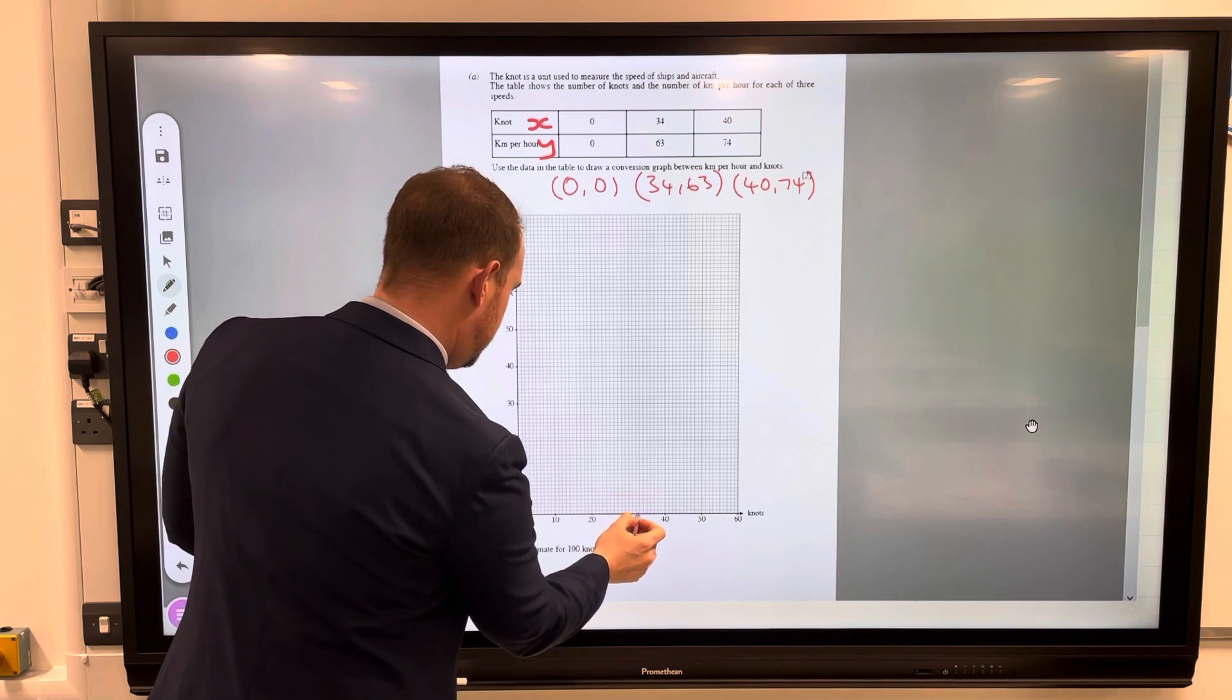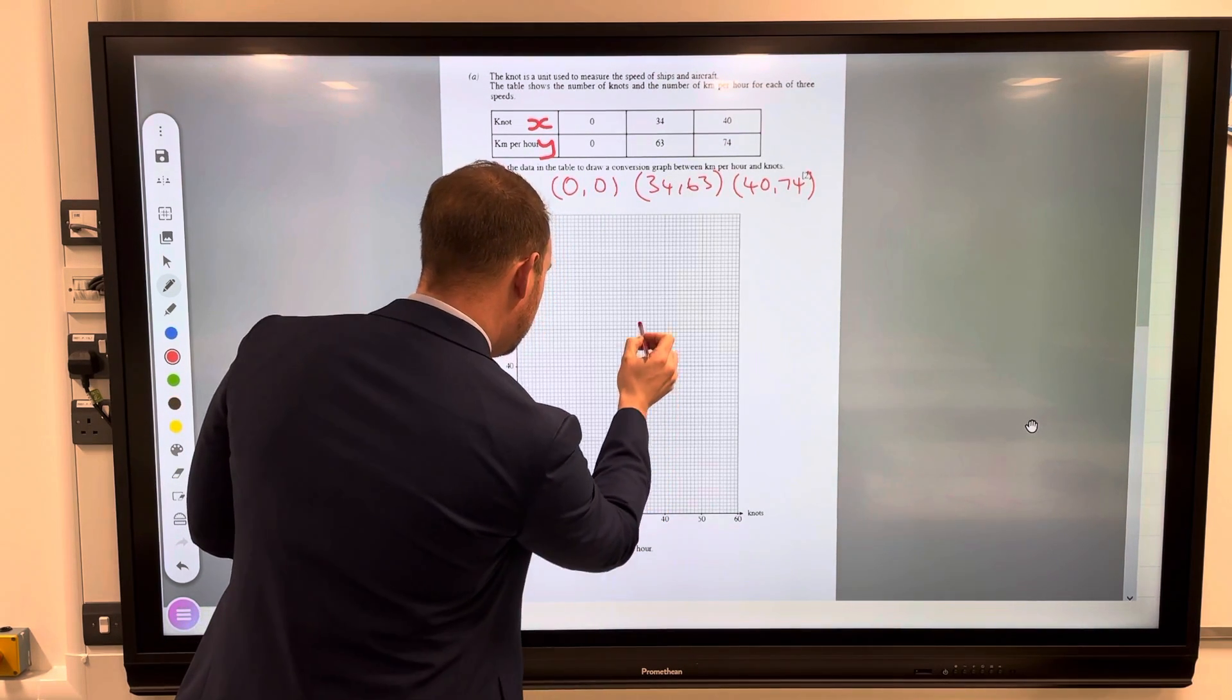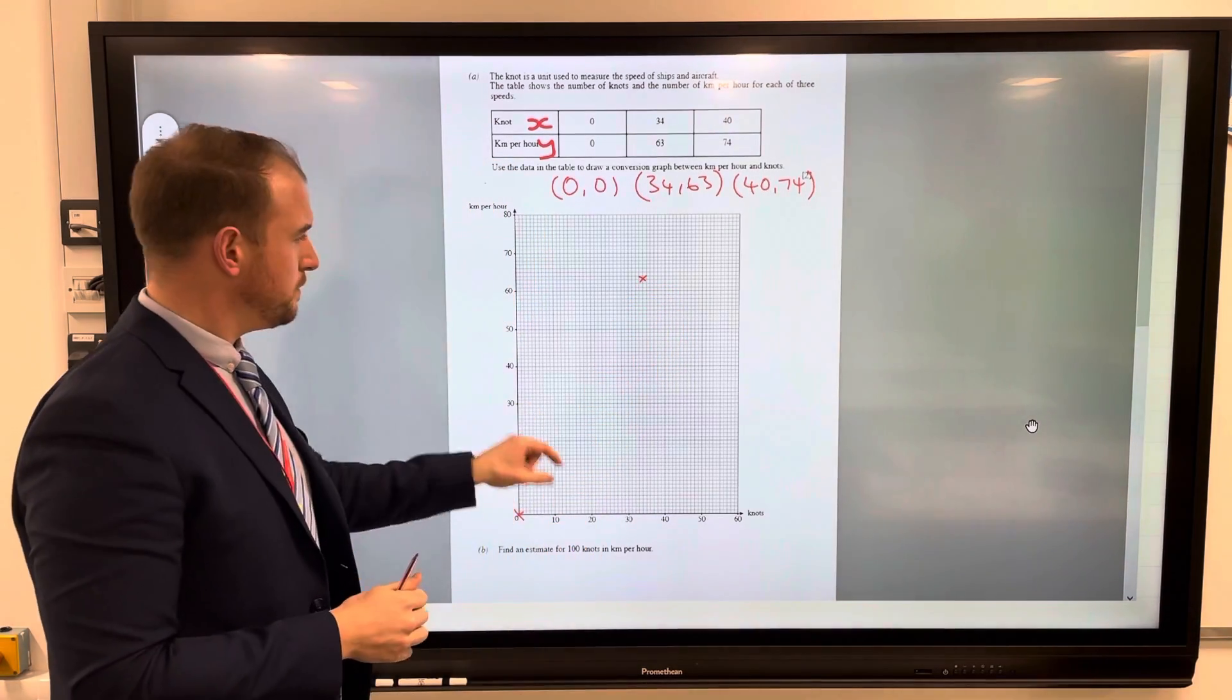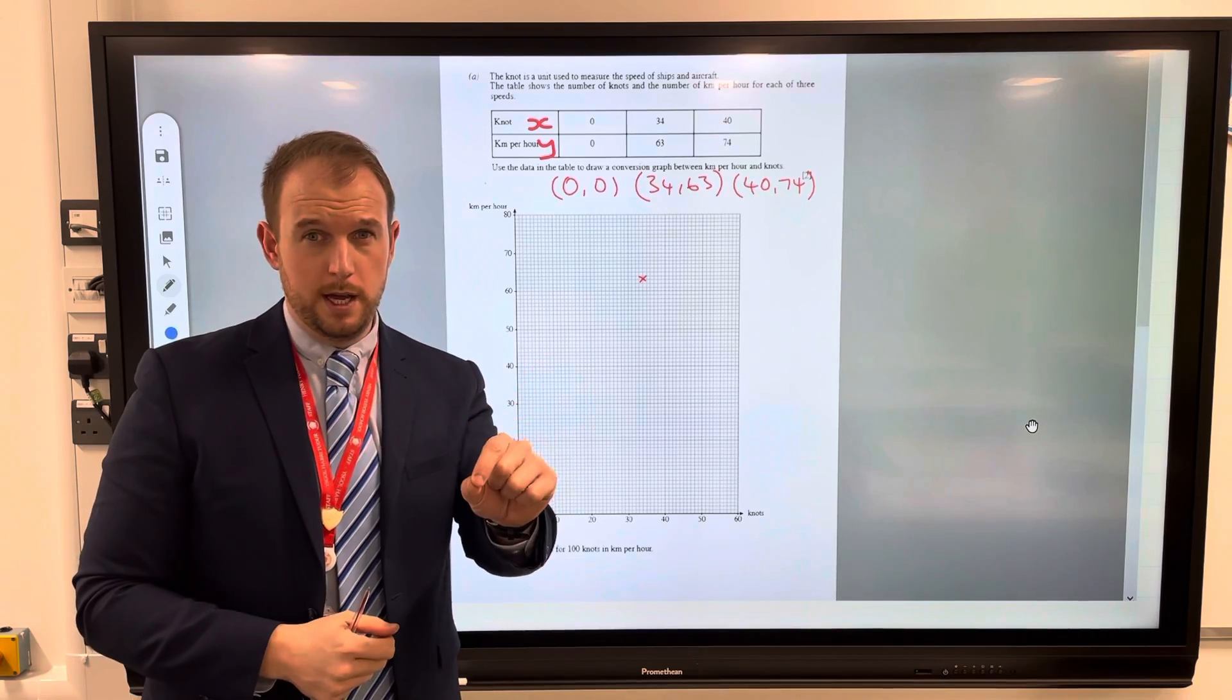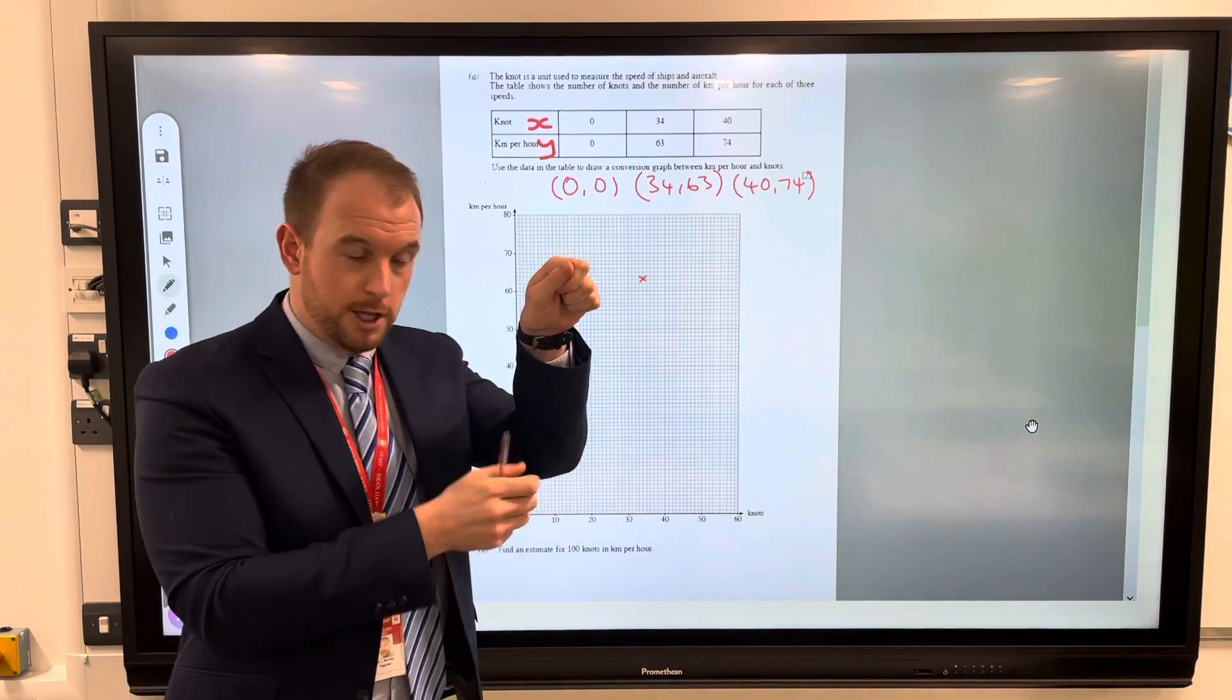Then up to 63. So 34 up to 61, 62, 63. Be careful when you're staring at these little squares, it might make your eyes go a bit funny. It might be worth putting a ruler across there and following the line up.